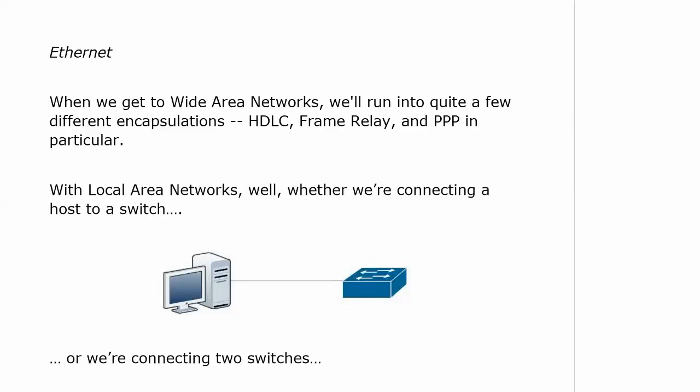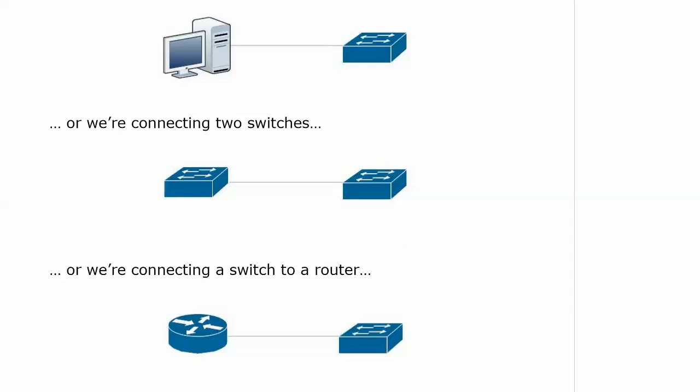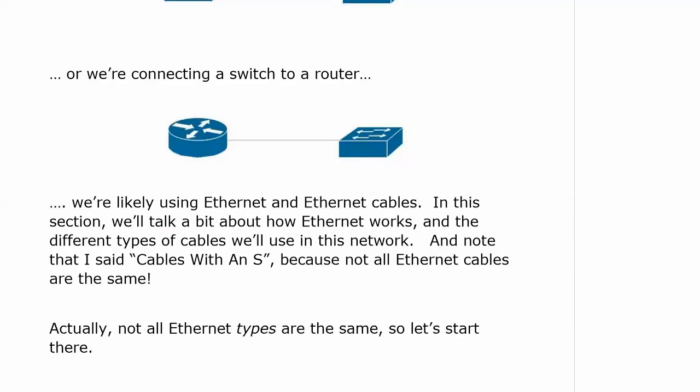When we discuss wide area networks in this course, and believe me we will, we're going to run into quite a few different encapsulations. We're going to have HDLC, frame relay, and the point-to-point protocol in particular. If you don't know what any of those three are, don't worry about it. But right now I want to concentrate on local area networks, and whether we're connecting a host to a switch, or connecting two switches, or a switch to a router, we are very likely using Ethernet and Ethernet cables.